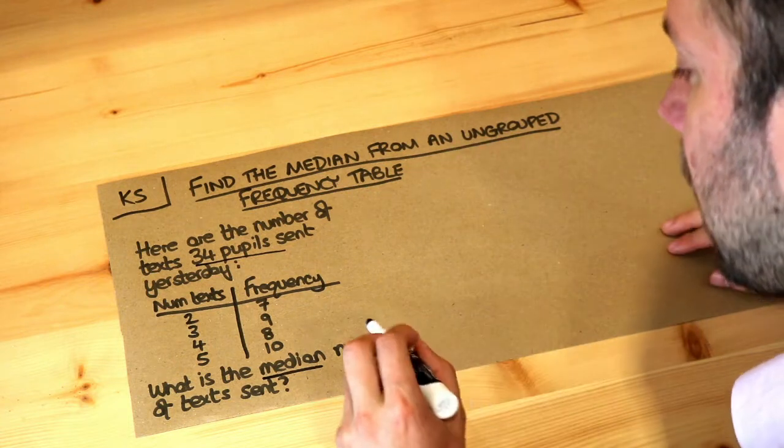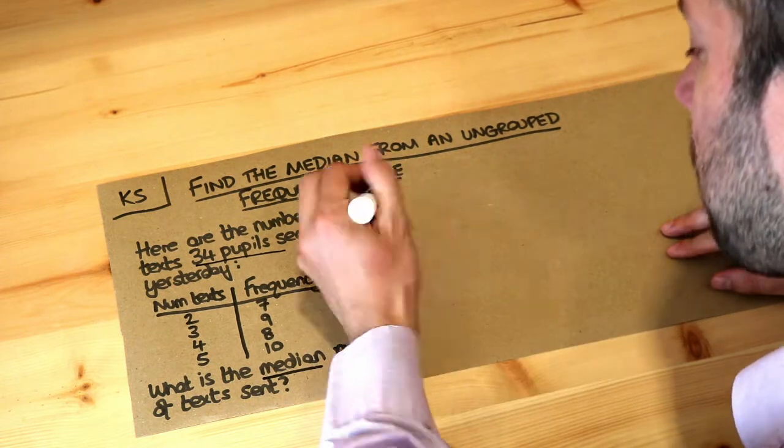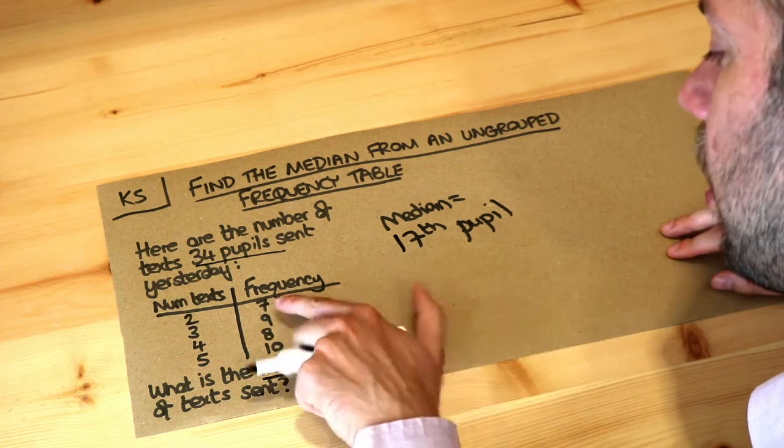Now let's just think about it logically. These students are ordered in terms of the number of texts they sent. If we want the 17th people, do they occur within the first seven peoples? No, they don't.